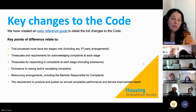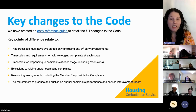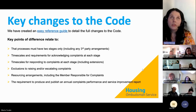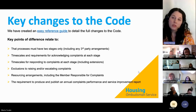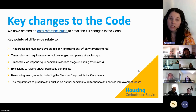There is also a requirement to produce and publish an annual complaints performance and service improvement report, which includes the self-assessment against the code. The code lists the topics we'd like covered in that report — there's no set template, but it does specify what we'd expect to see. Landlords can put the report together themselves, and we just ask that it includes the bullet points from the code as well as the self-assessment.